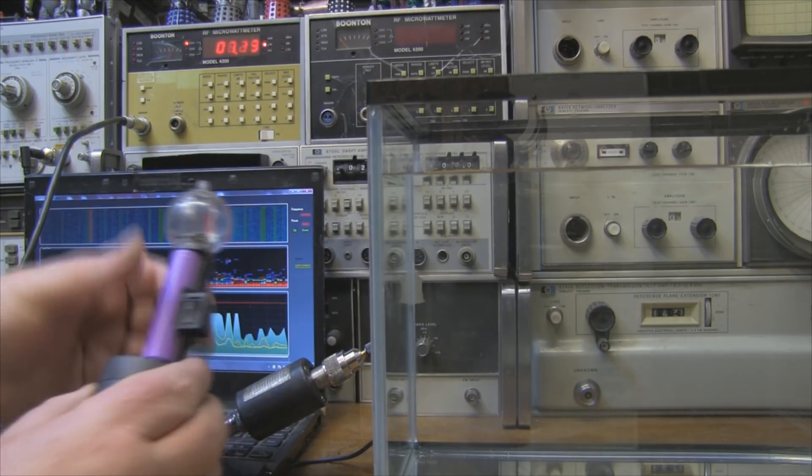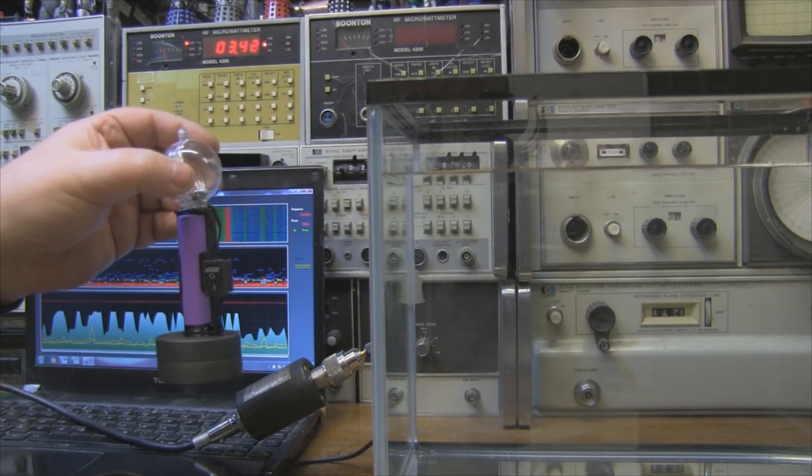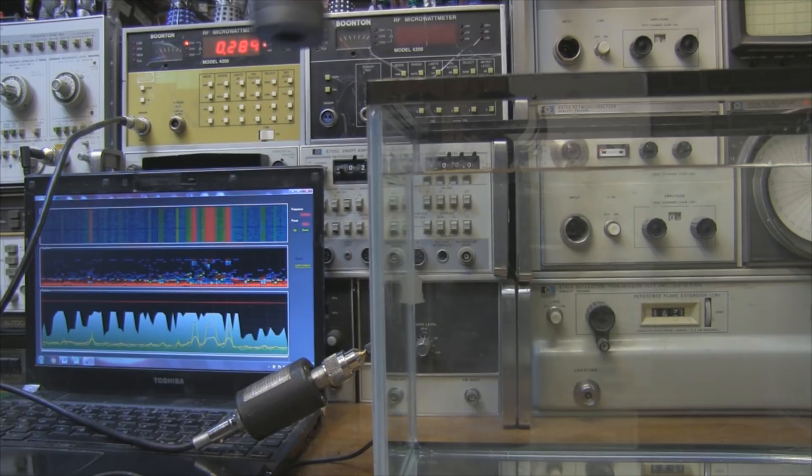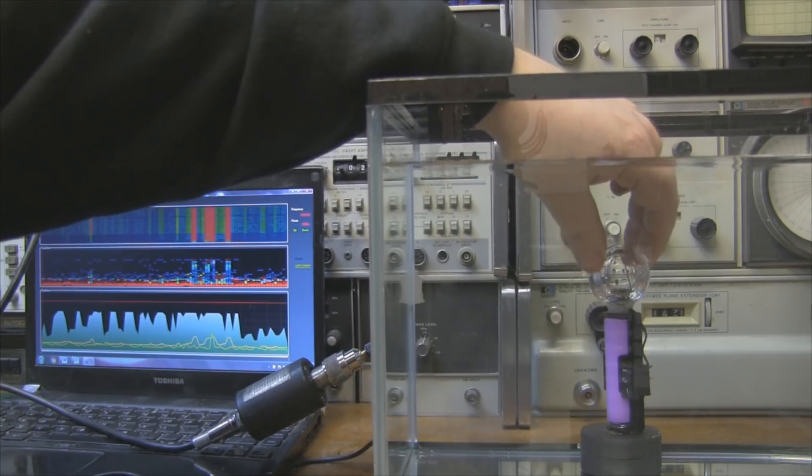So what I'm going to do now is pop it into the water, and hopefully we'll see the power meter drop away to just the background, and those big thick red lines should also disappear from the spectrum analyzer.